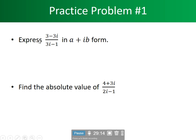Now let's see if you're learning this. Express the equation (3 - 3i) divided by (3 - i) in rectangular coordinates. Also find the absolute value of (4 + 3i) divided by (2i - 1). Try it on your own, then come back and look at the answers.